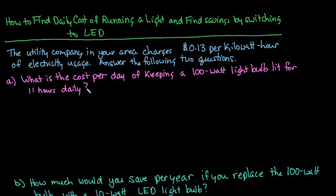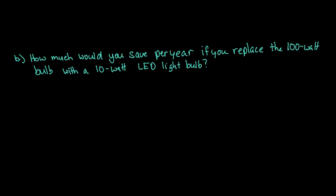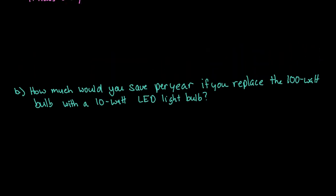So the utility company in your area charges 13 cents per kilowatt hour of electricity usage and we're going to answer the following two questions. The first is what is the cost per day of keeping a 100 watt light bulb lit for 11 hours? And that's every day we would keep it on for 11 hours and then we're going to look at the question: how much would we save per year if we replace that 100 watt bulb with a 10 watt LED light bulb?